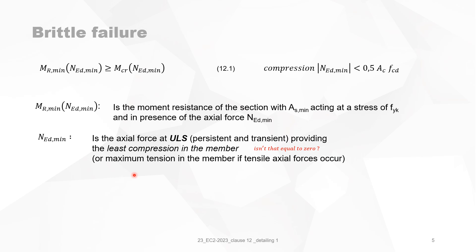We must remember that chapter 12 is about brittle failure, which occurs after the construction is built in most cases. The least compression in the member means only the self-weight is present in the construction. Be very careful: if you have a building where some levels can be demolished, then NED min will get smaller. It is very tricky to calculate the minimum reinforcement in presence of NED min because NED min lowers the needed minimum reinforcement. It is advisable to take zero when it is a compression force.